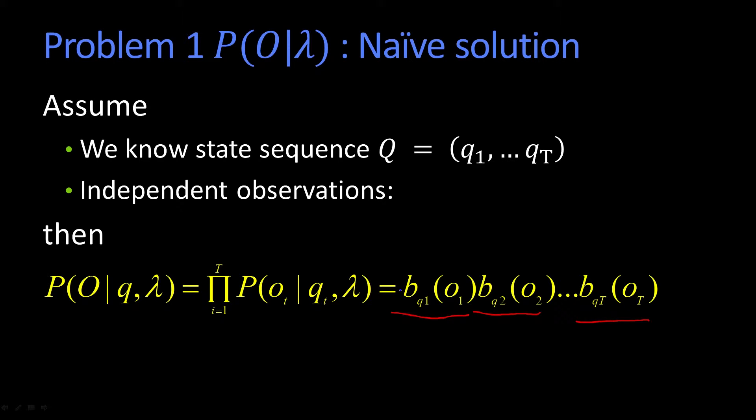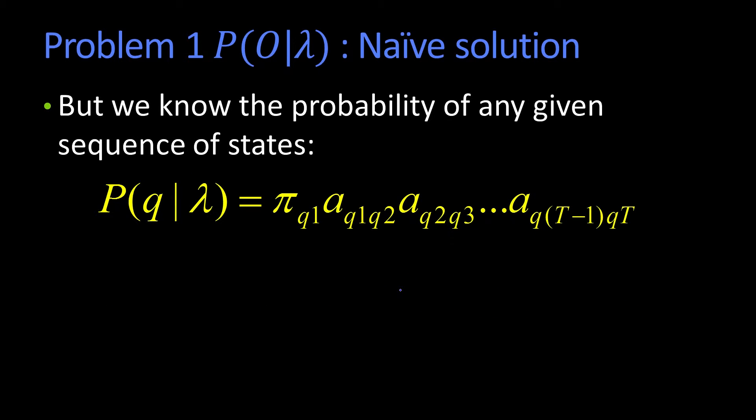So if we knew the state sequence, then we could just multiply this to get the likelihood of the observation sequence given the state sequence. But for any given state sequence, I can tell you the probability of getting that state sequence. It's just a very simple product shown here. So if I know it's q1 through q cap T, then it's the probability, here's pi of q1, of starting in that state.